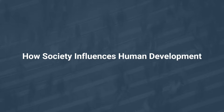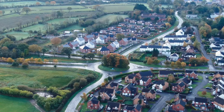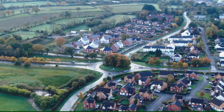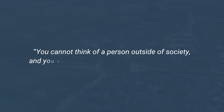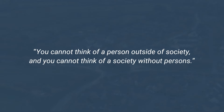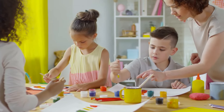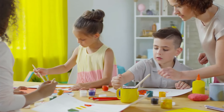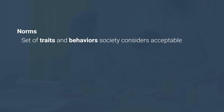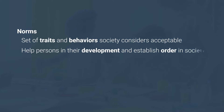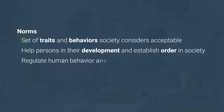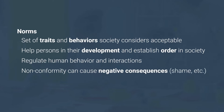The individual human person and society are intimately related. You cannot think of a person outside of society, and you cannot think of a society without persons. Just as we can influence society's progress with our actions, so society is able to influence our development as human persons. One of the fundamental ways society does this is through norms, or the set of traits and behaviors that it considers acceptable. Social norms help human persons in their development and establish order in society by regulating human behavior and interactions. When members of a society do not conform to its norms, they can experience negative consequences, such as shame or even punishment.